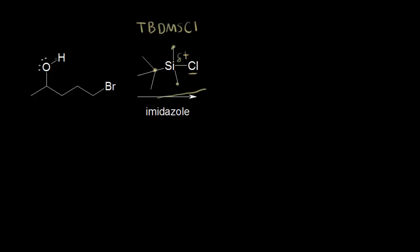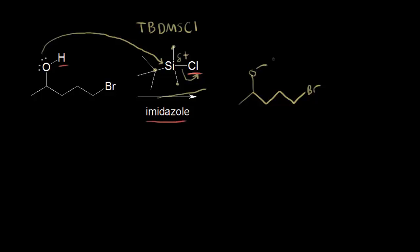The alcohol over here is going to function as a nucleophile. The lone pair of electrons is going to attack the silicon, and then these electrons will kick off onto the chlorine. We would lose HCl in the process, and the imidazole helps to remove the HCl. The mechanism is a little more complicated, but simply: nucleophile attacks electrophile, and you put your protecting group onto your alcohol. We now have our oxygen bonded to the silicon, with two methyl groups and a tert-butyl group on silicon.